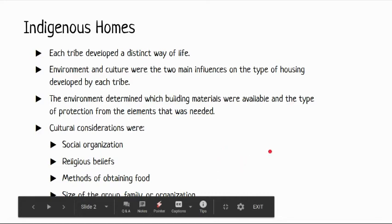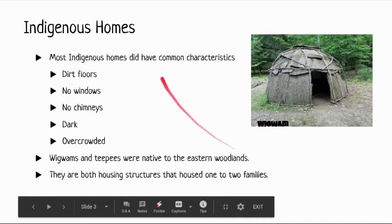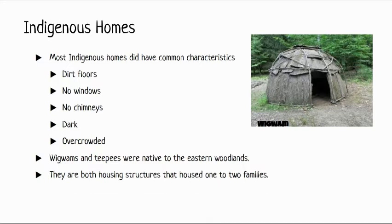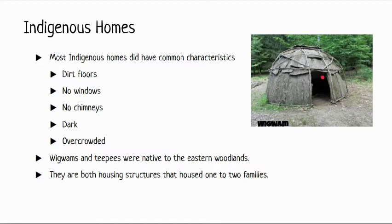Even though each indigenous tribe was different, a lot of their homes had common characteristics. Their homes had dirt floors — carrying flooring material would have been impractical — and they typically didn't have windows or chimneys. They were also dark and overcrowded, with more than one family sharing a single dwelling. There were no separate rooms; everything was one large open space.